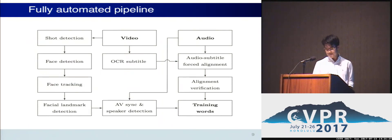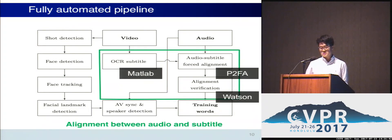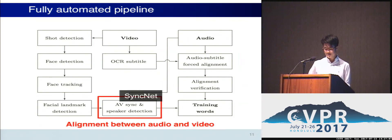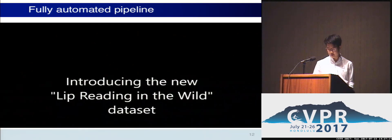Here's the summary of the pipeline. What we want to get out of the video is the faces tracked and spatial landmarks detected so we know where the mouth is, using off-the-shelf vision packages. From the audio and subtitles, we need the timestamp for each word, obtained by aligning the audio to the subtitles using a tool called P2FA for force-alignment, double-checked with a commercial speech recognition system. For lip sync error correction, we use a lip sync CNN called SyncNet.